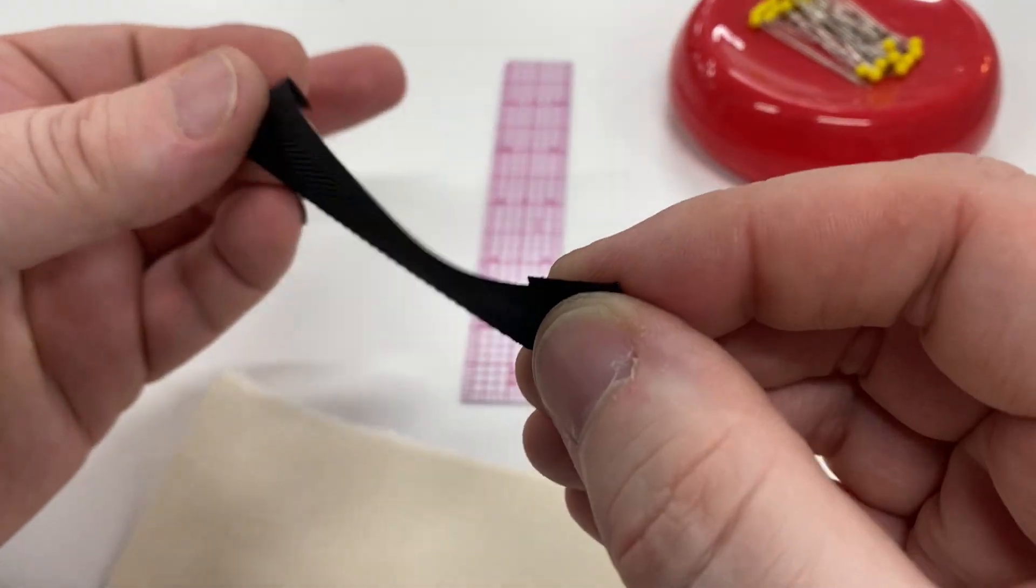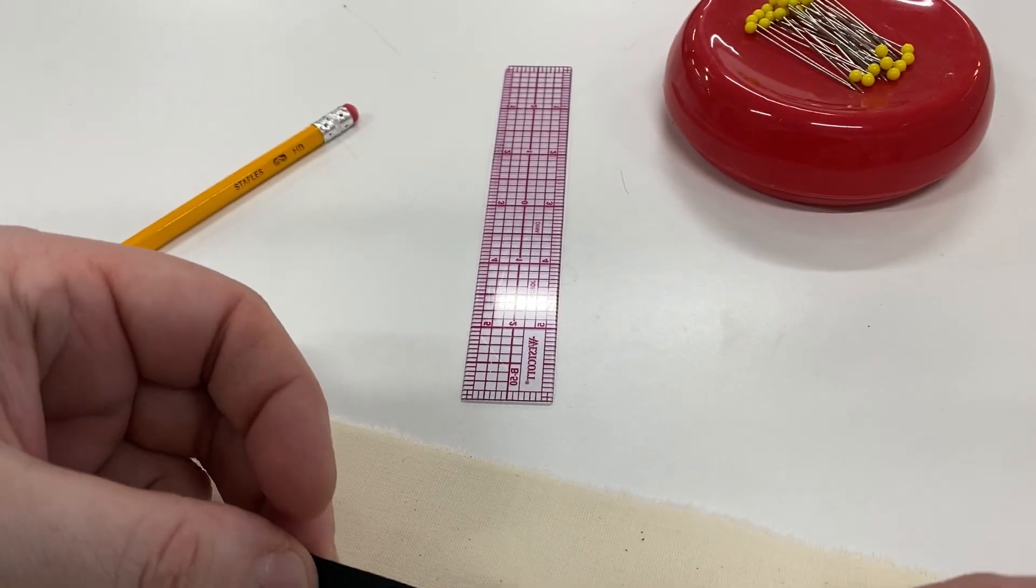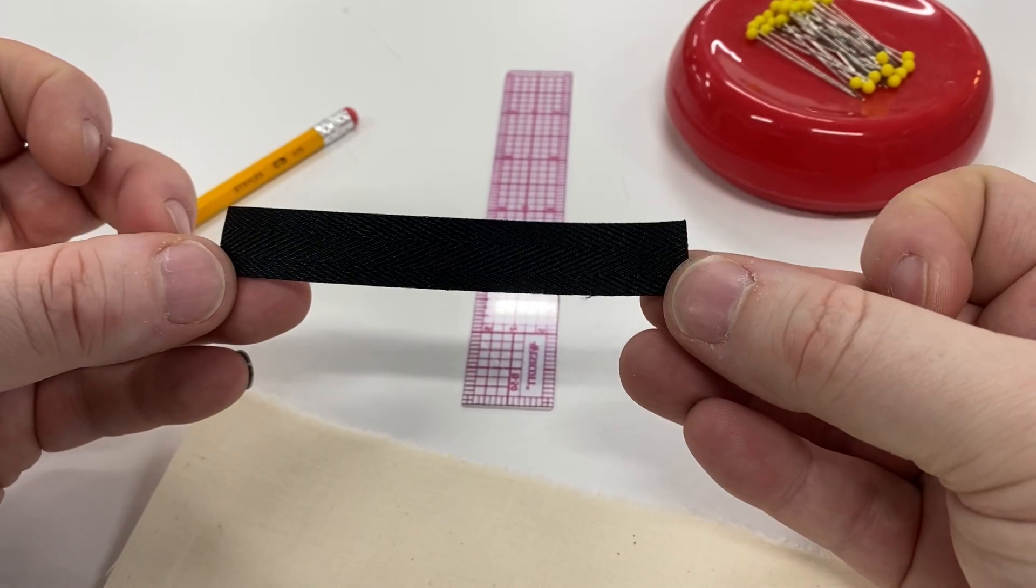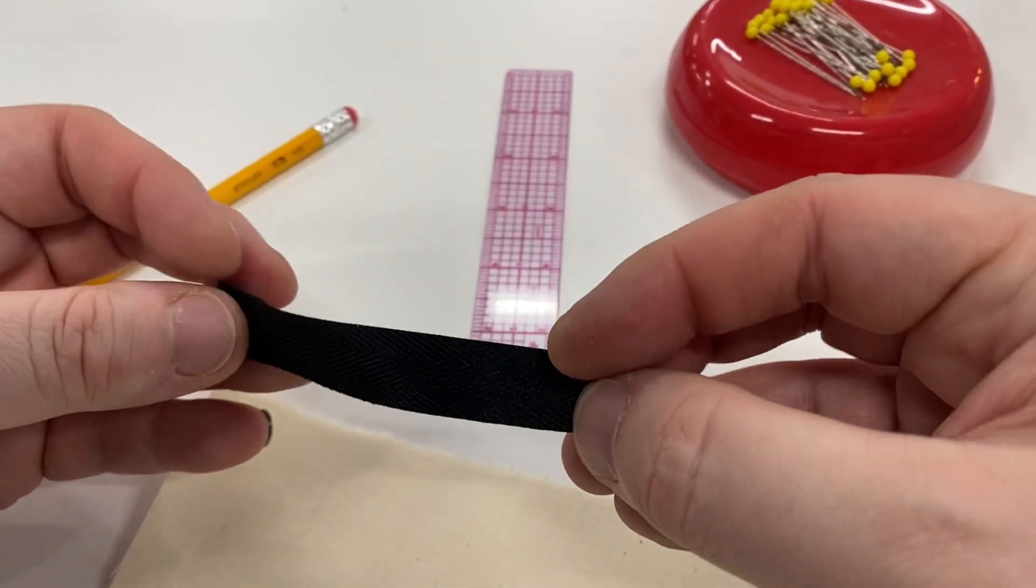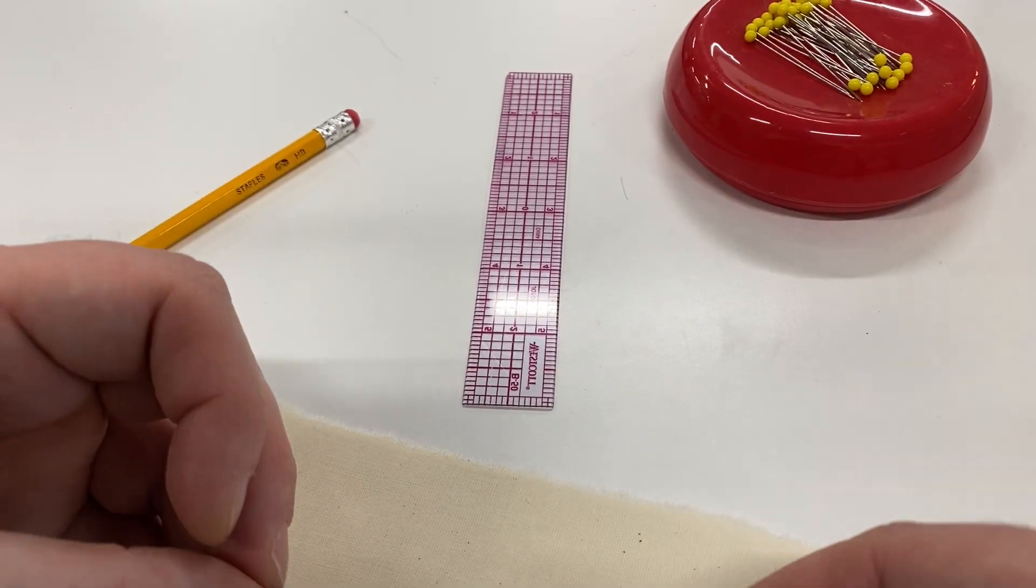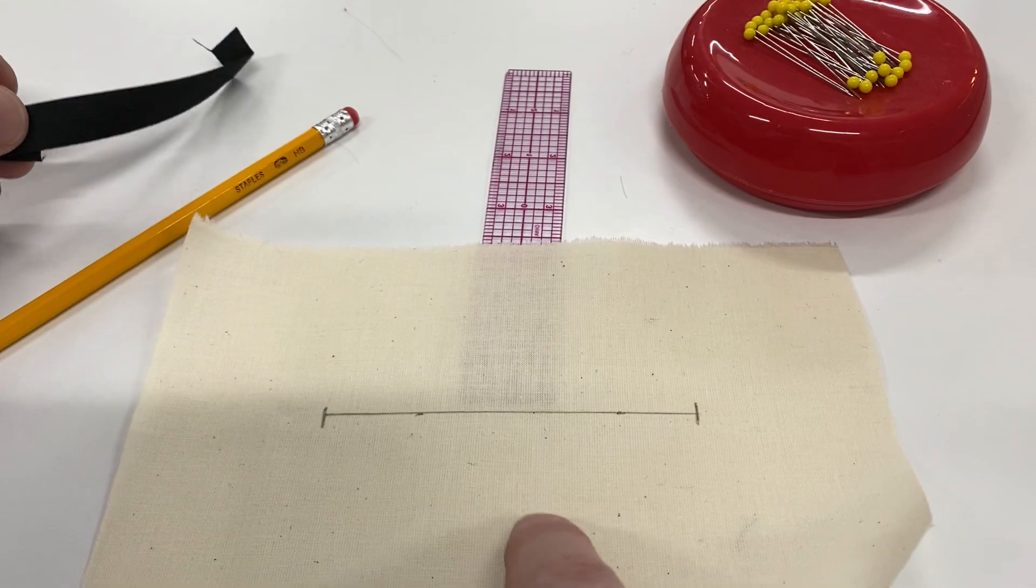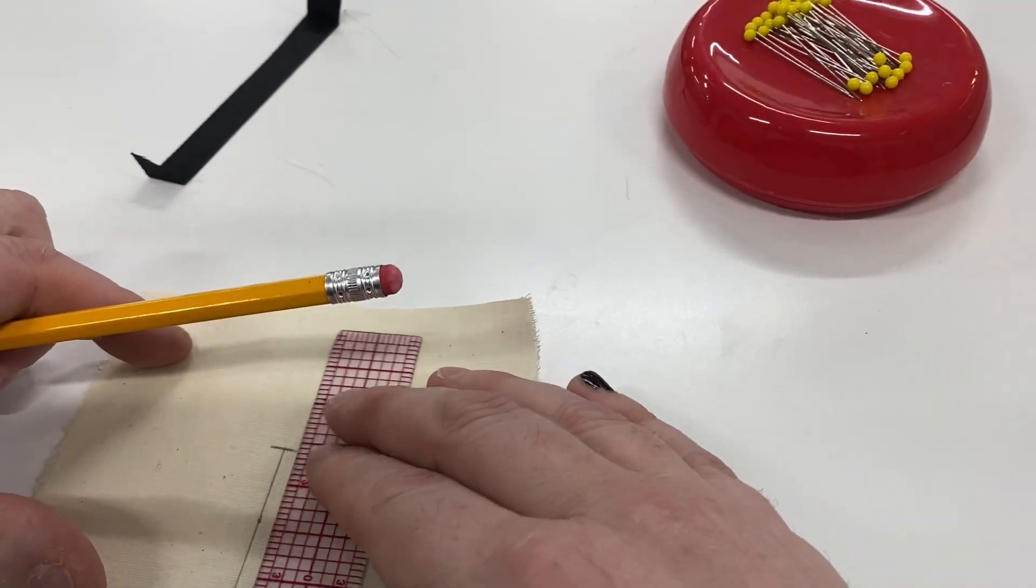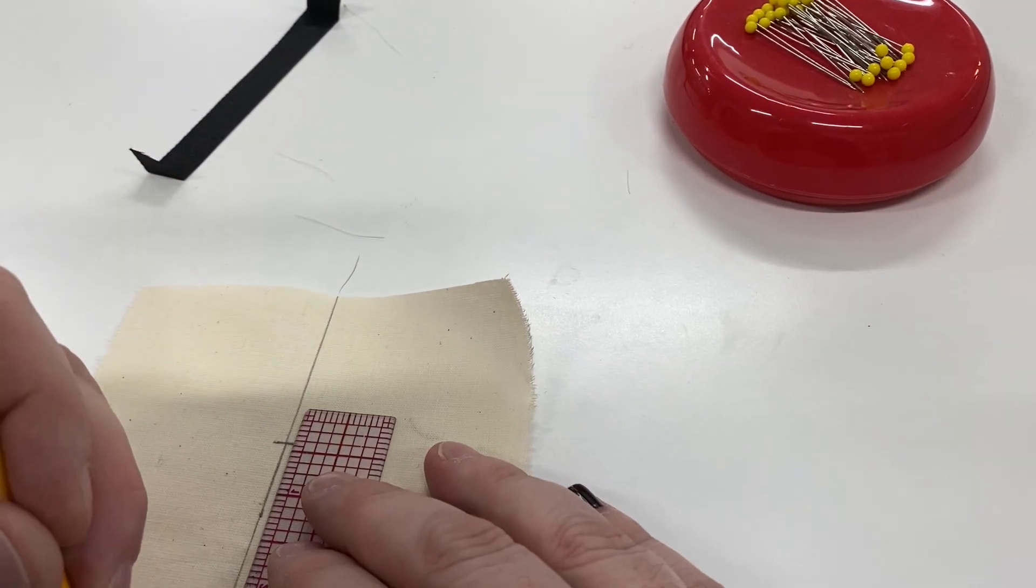So I've taken my piece of twill tape, I have finished off my edges. And what we are going to do is gather this piece of fabric down. Now you're going to want to take a ruler and extend this line. I have been slightly misleading in the markings of this pattern.